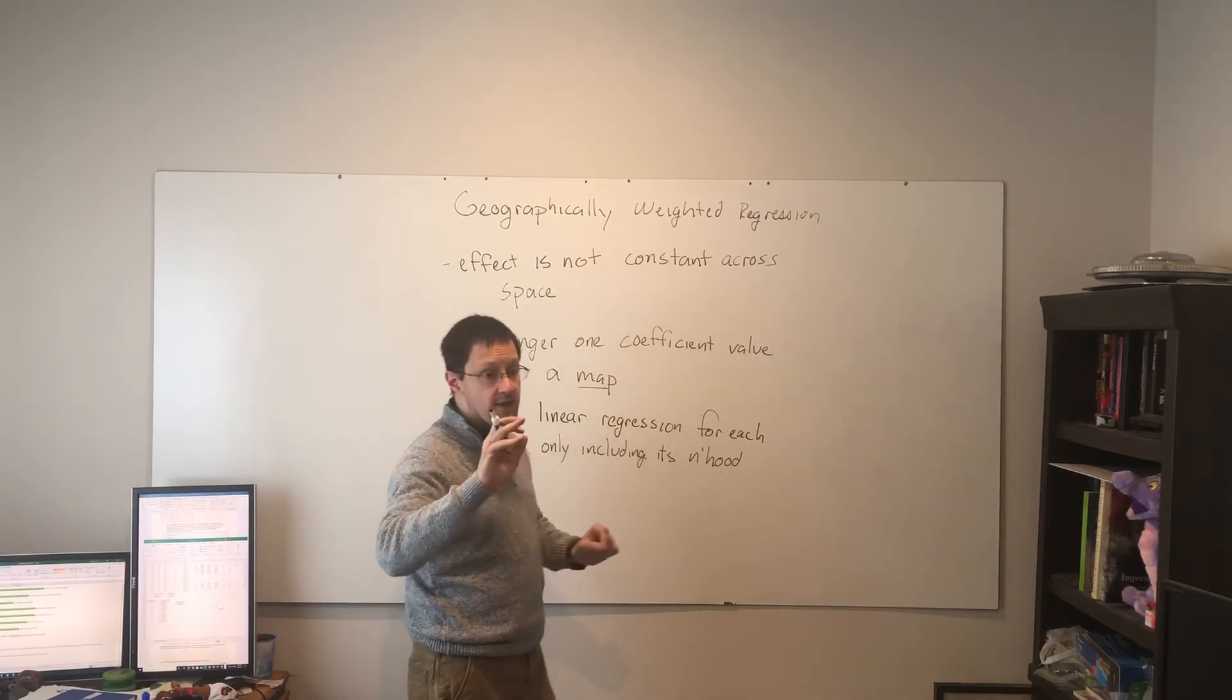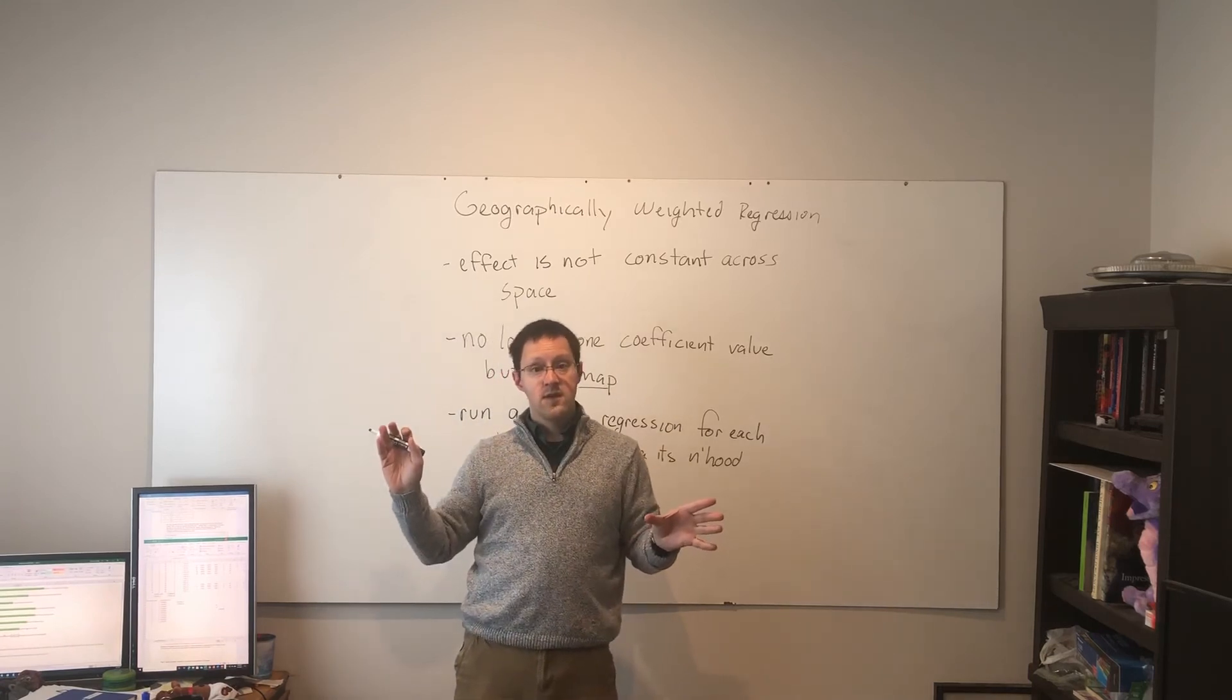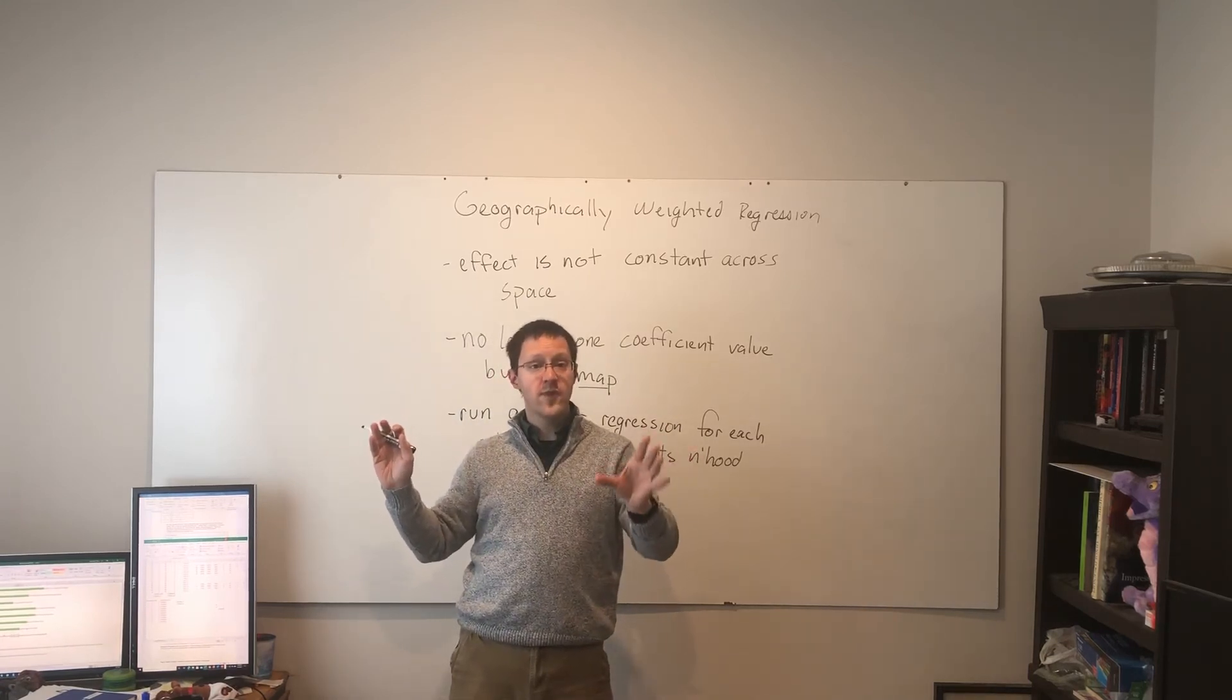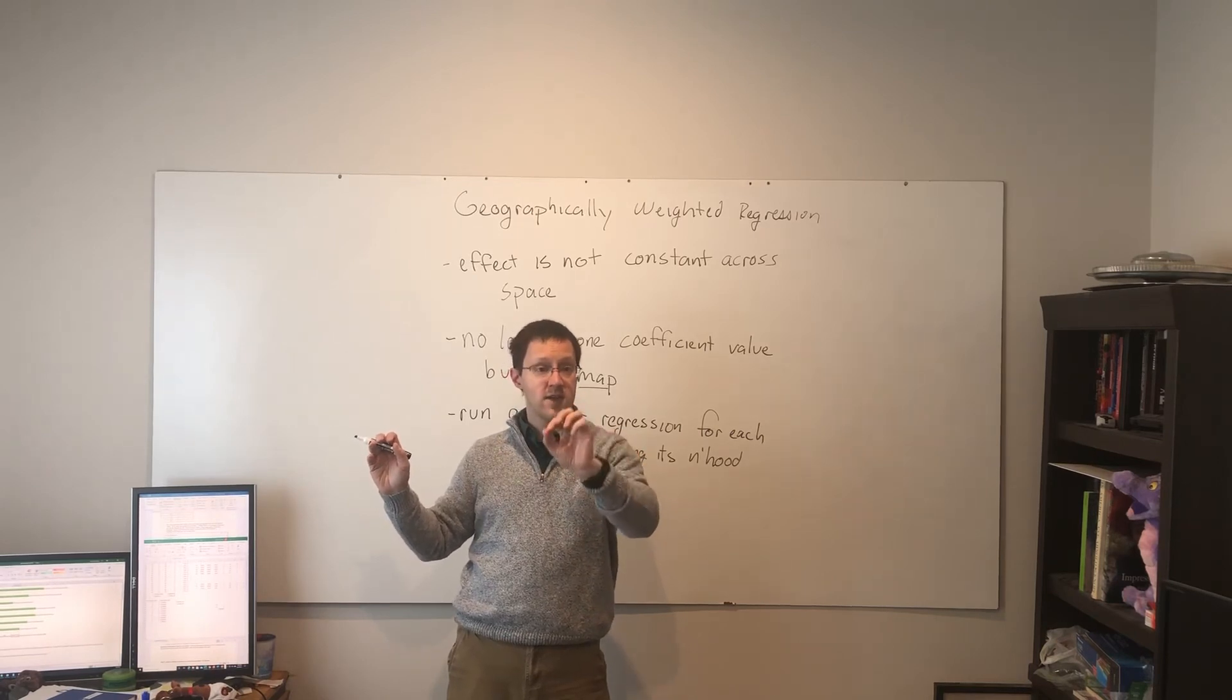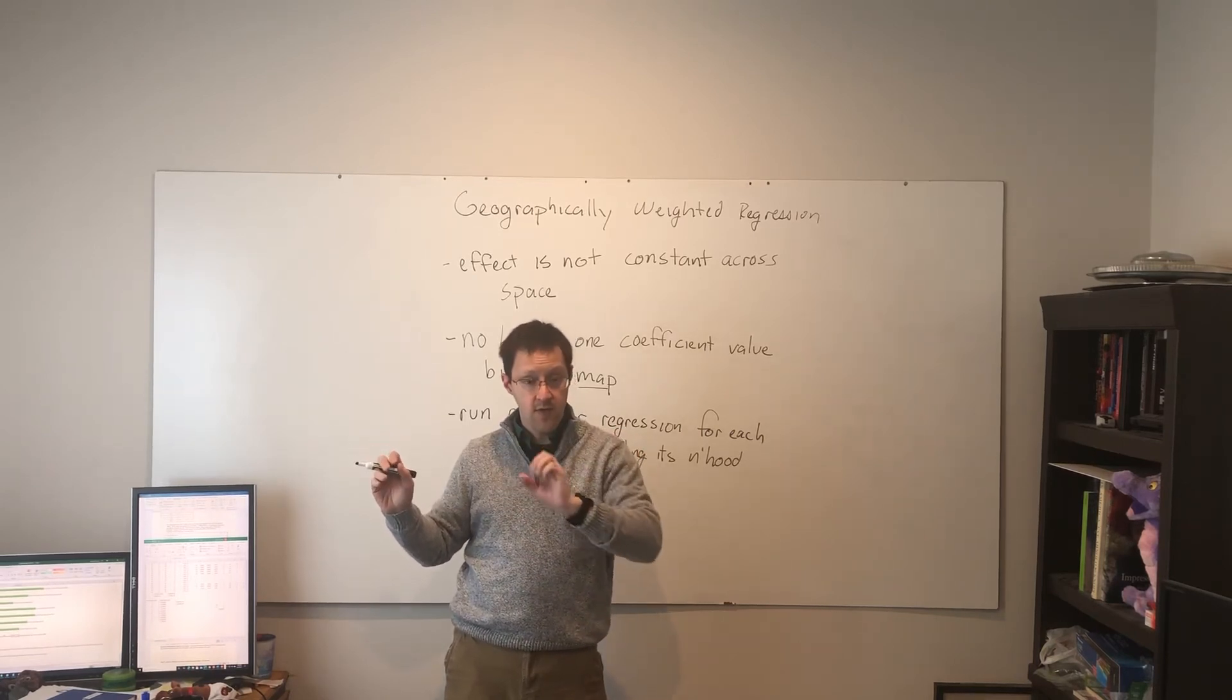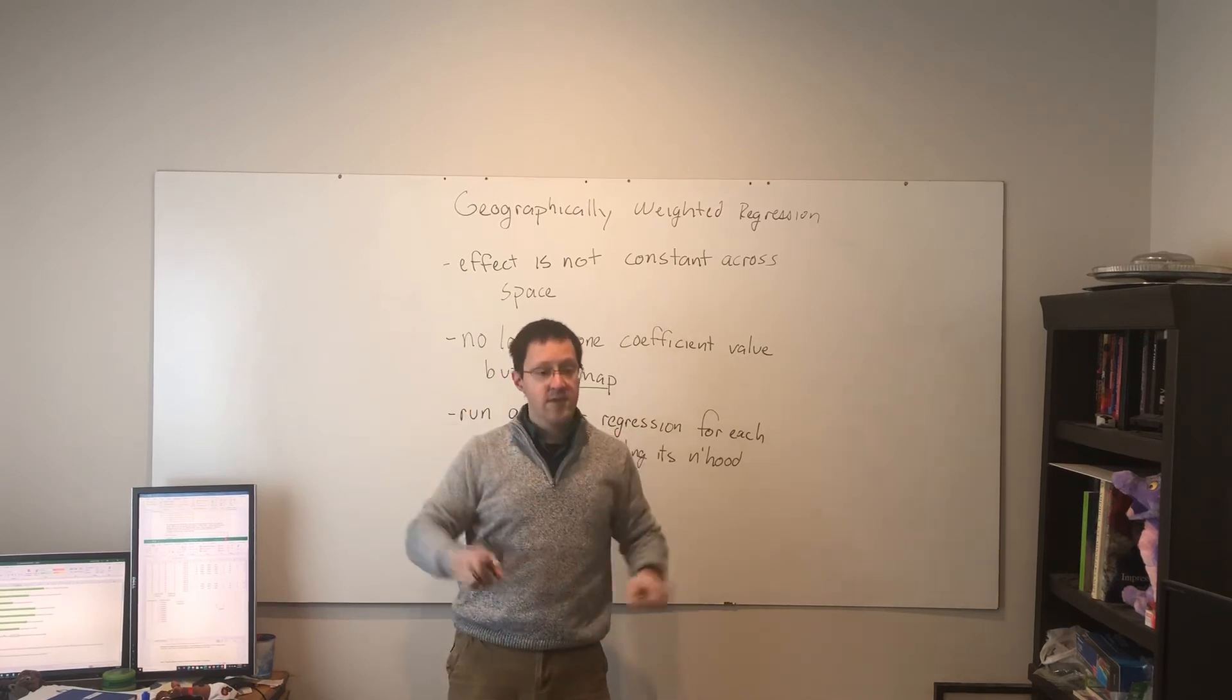So, if I have an 8 nearest neighbor neighborhood, that means I'm going to do 55 regression equations, each of which has nine entries, nine observations. The central place and its eight nearest neighbors.